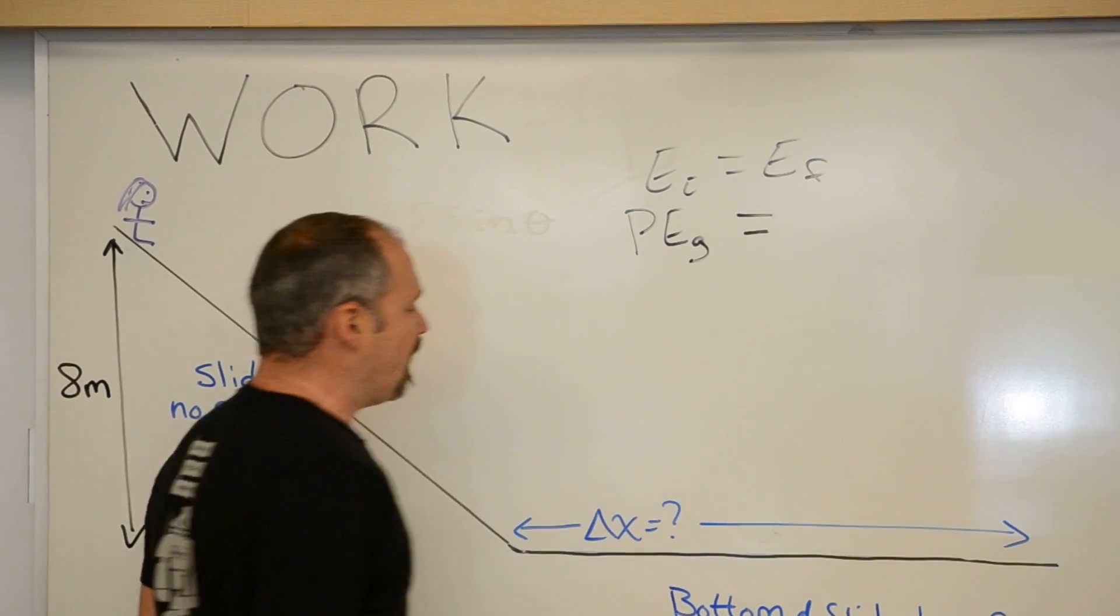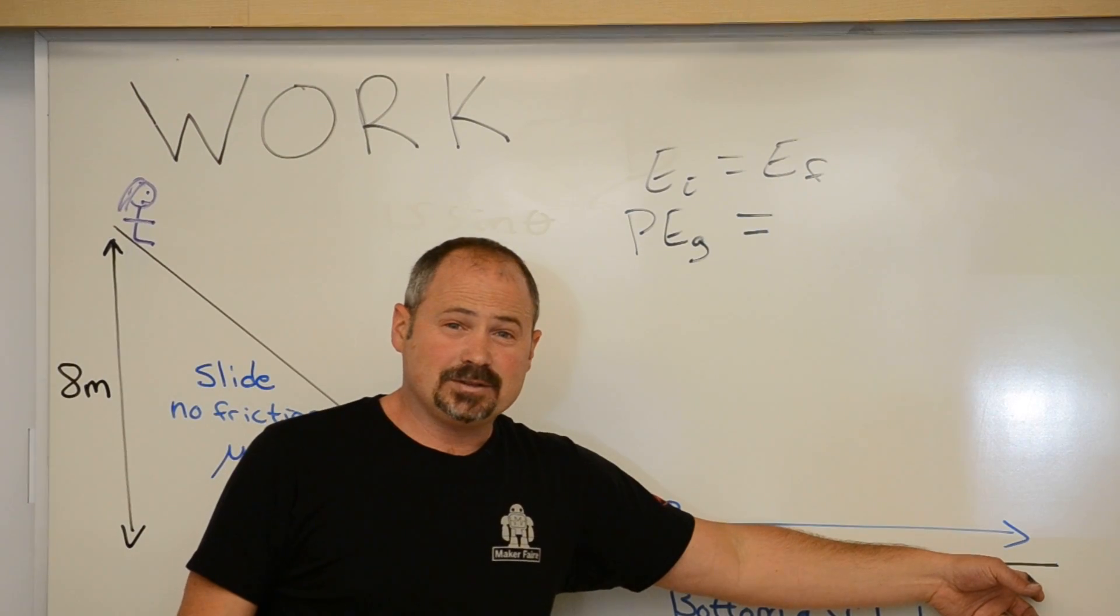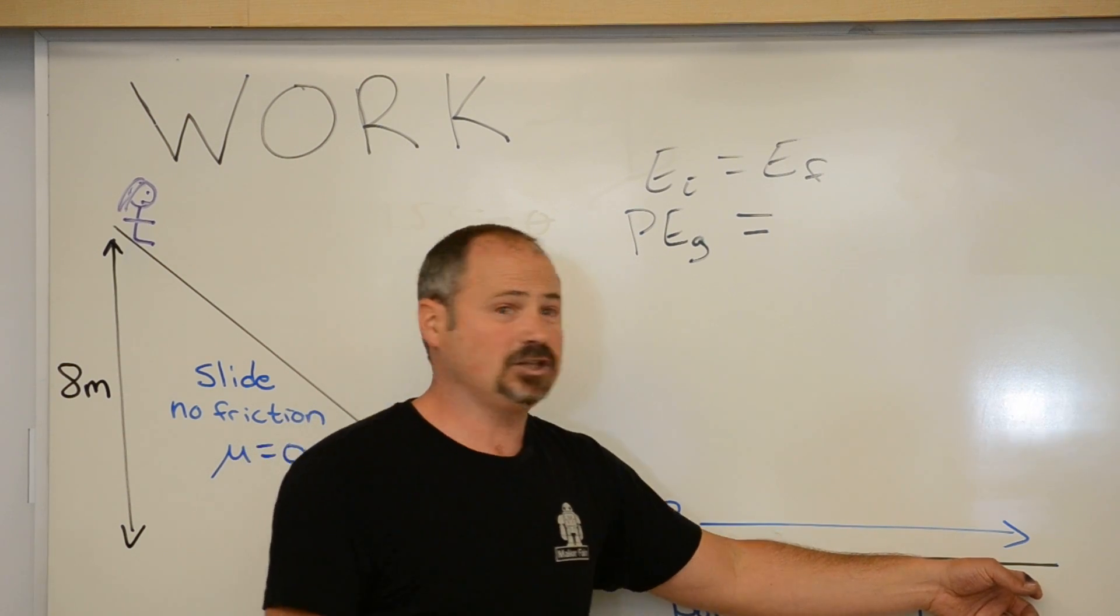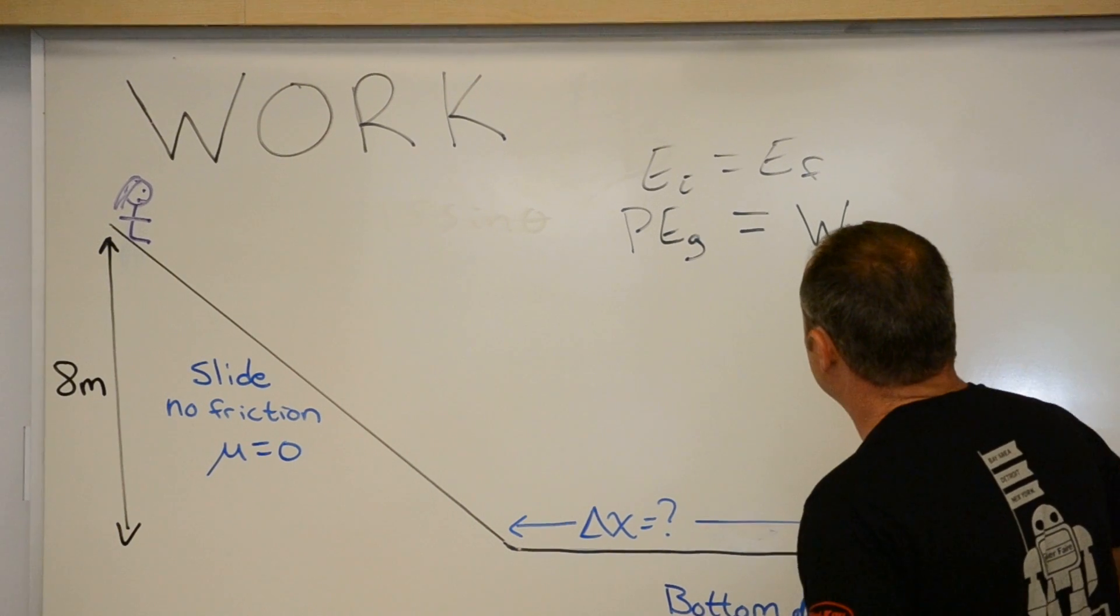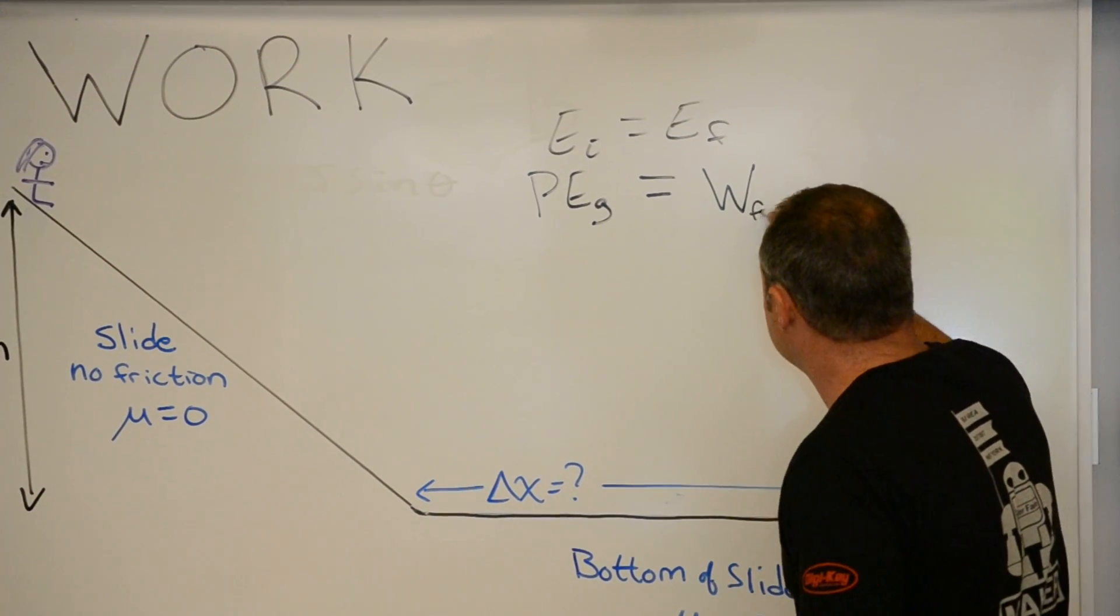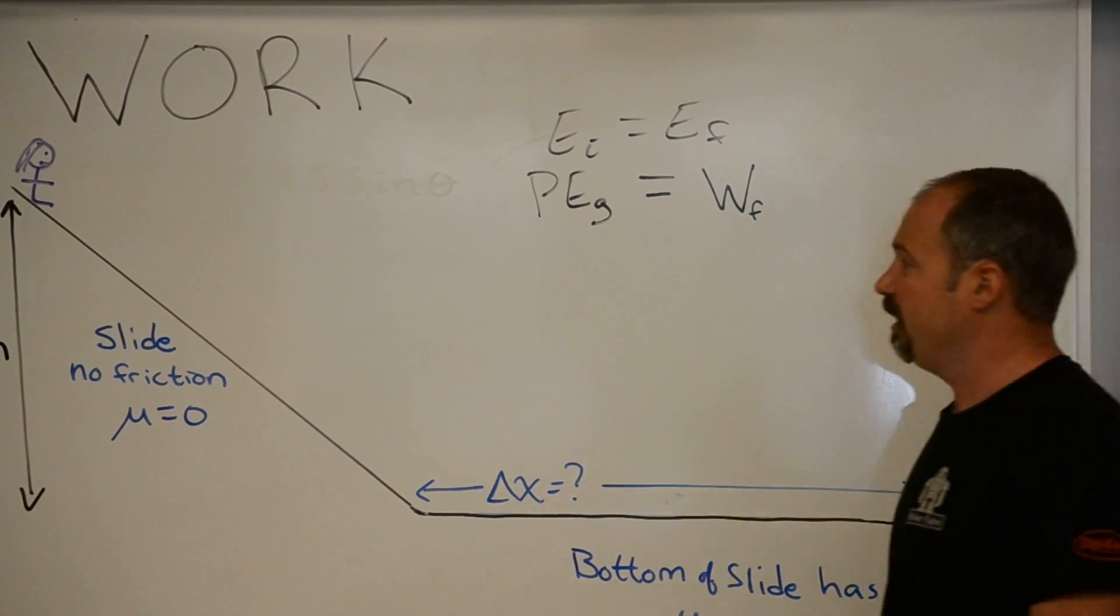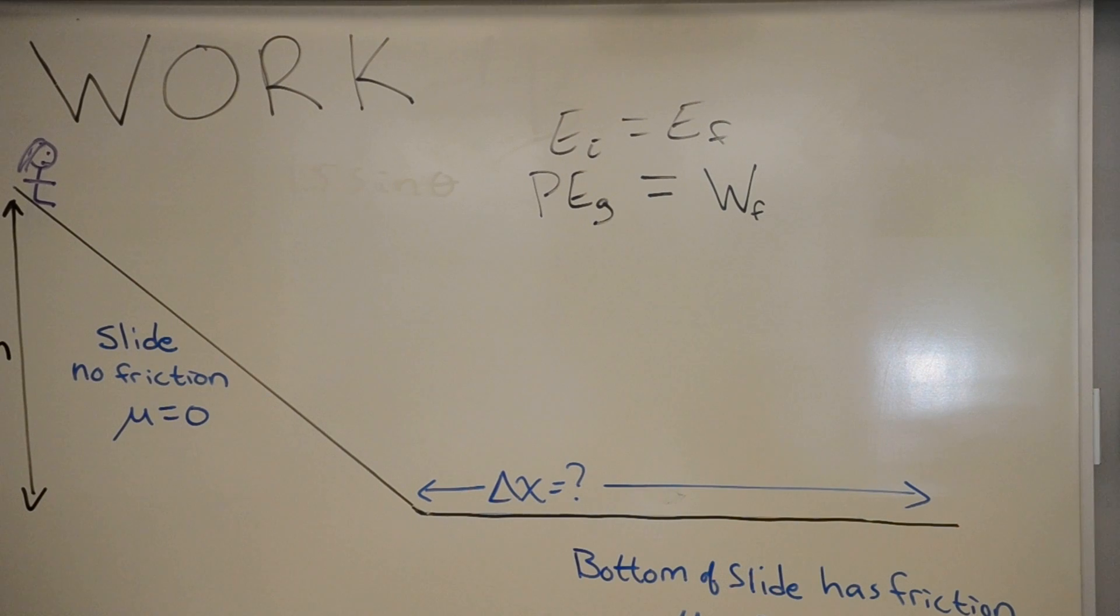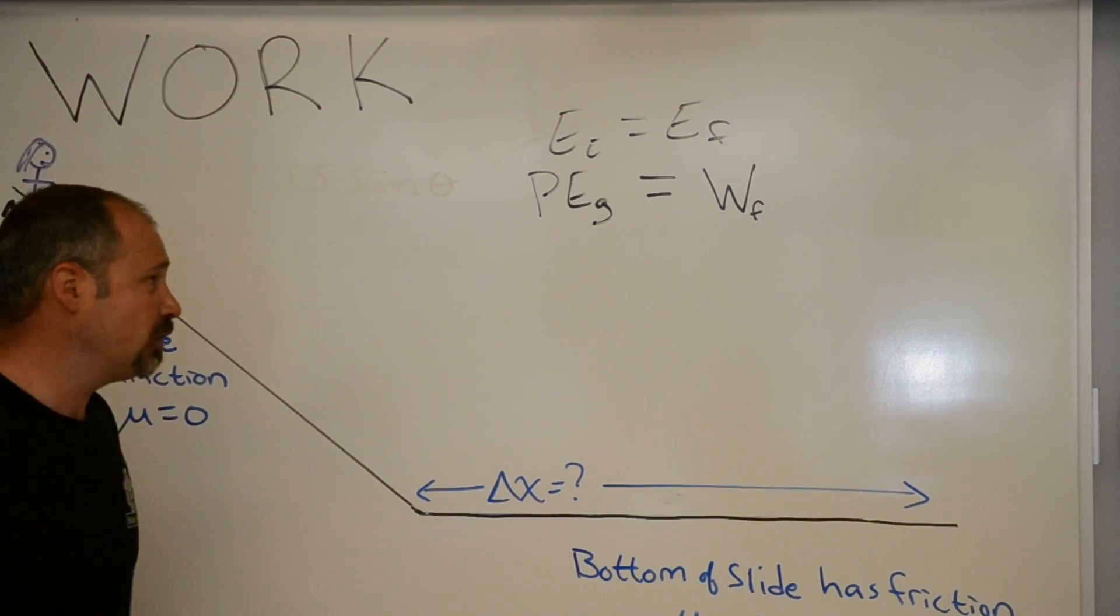And then at the bottom, well, she comes to a stop. And she's at the bottom. No potential energy. No kinetic energy. She has transferred her energy out via the work of friction to the environment. She heated up the slide. Probably heated up the air a little bit. Made some noise. So, good.